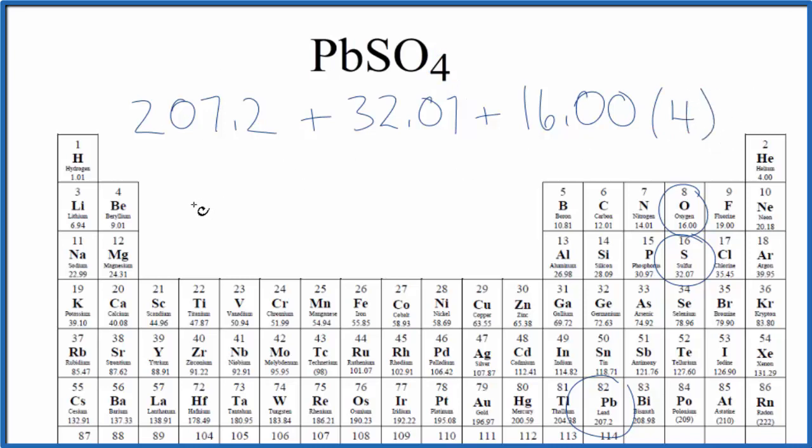So when we do the math here, we end up with a molar mass for PbSO4 of 303.27, and the units are grams per mole.